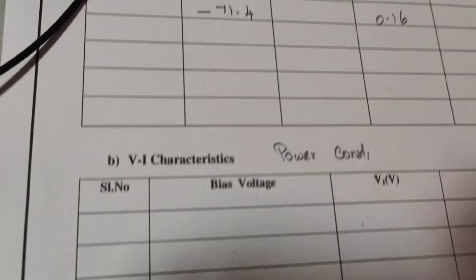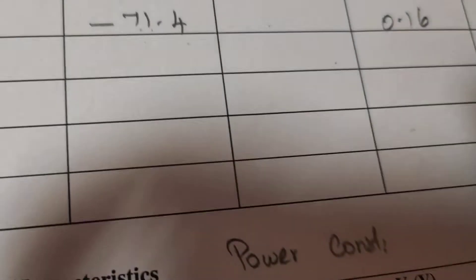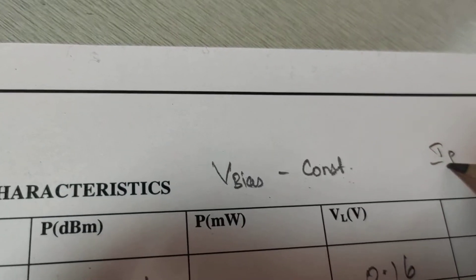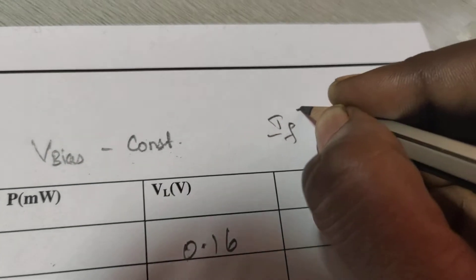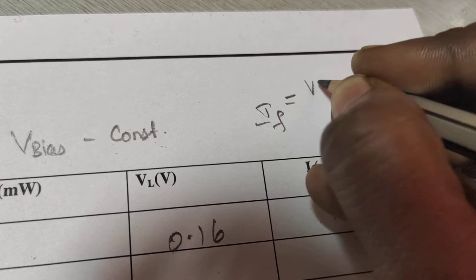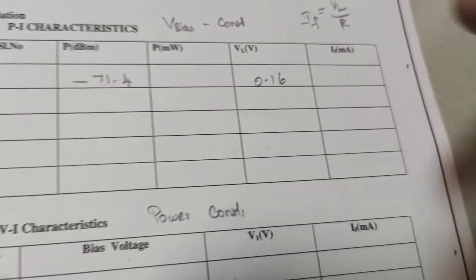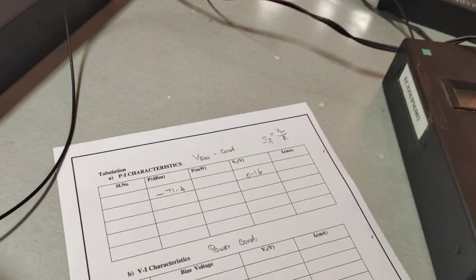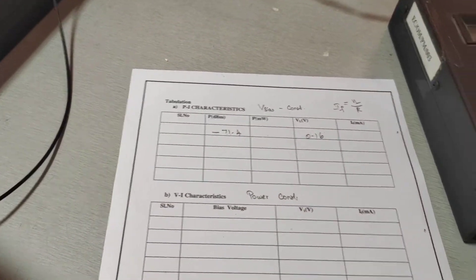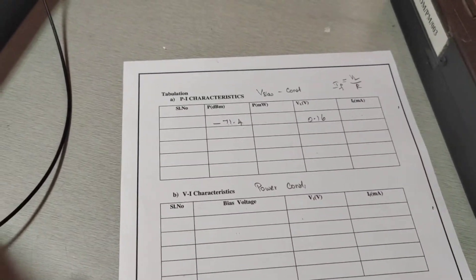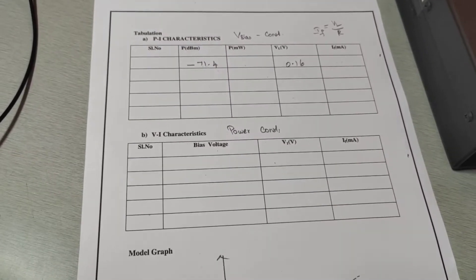The forward current IF is calculated as VL divided by R. In this way, we repeat the procedure to take five or six readings, then plot the P-I characteristics for the forward bias condition.